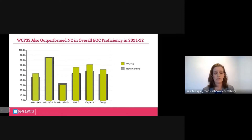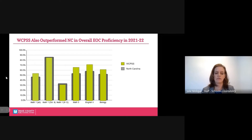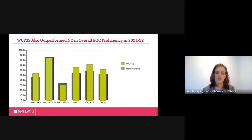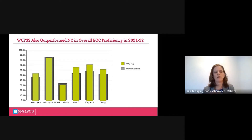If we look at our EOC results, we see a very similar story. But don't be dissuaded by Math 1 at grade 8 and Math 1 grades 9 through 12 being slightly below the North Carolina average. If you look at NC Math 1 as a whole, we do achieve higher than North Carolina. The reason is we have a larger proportion of students taking NC Math 1 in middle school, which creates the disproportionality when you look at grade 8 and 9 through 12 separately. When we look at all Math 1 tests taken last year, we are still above the state average.